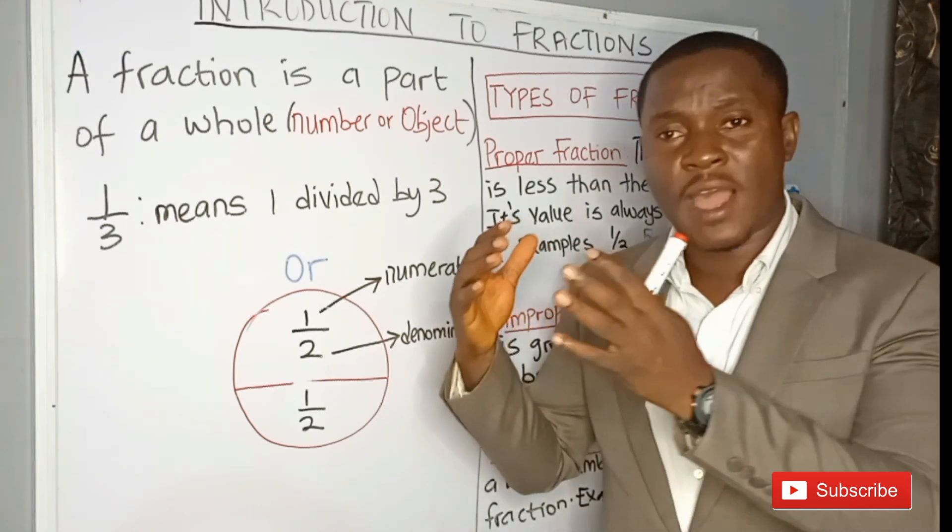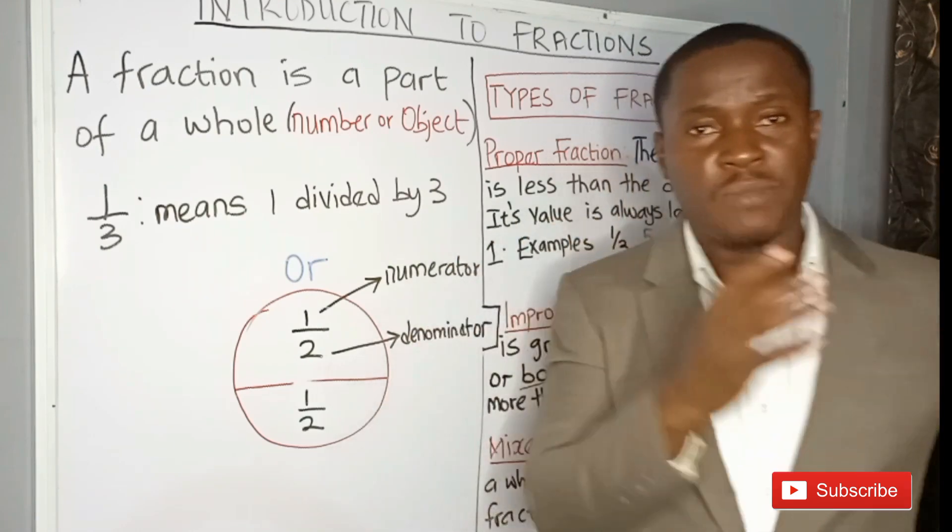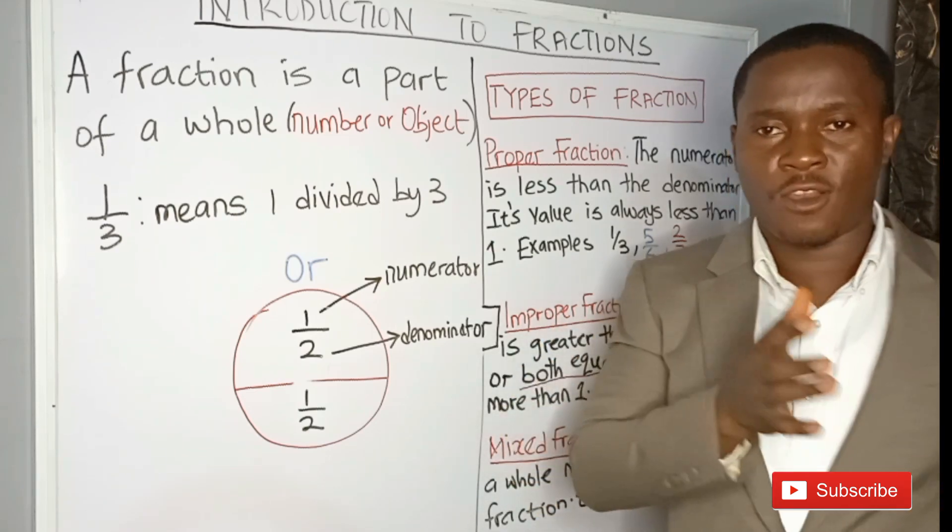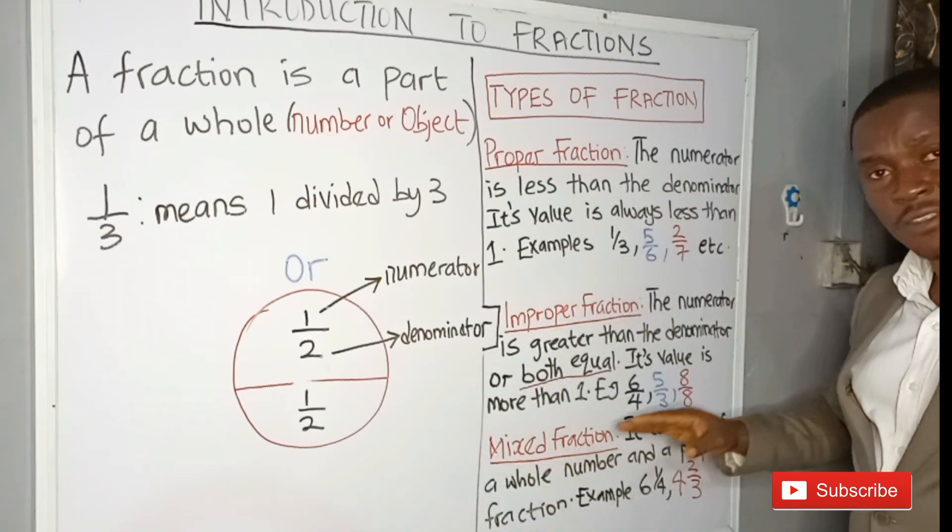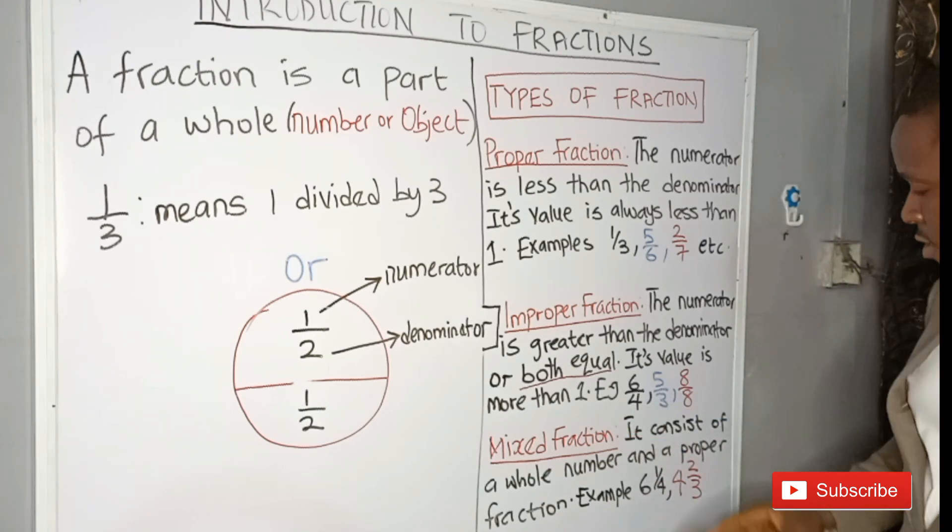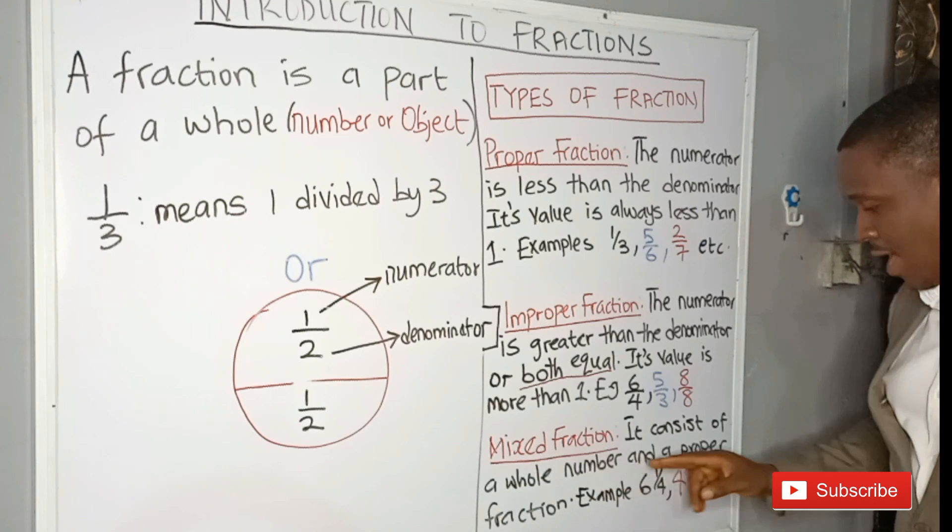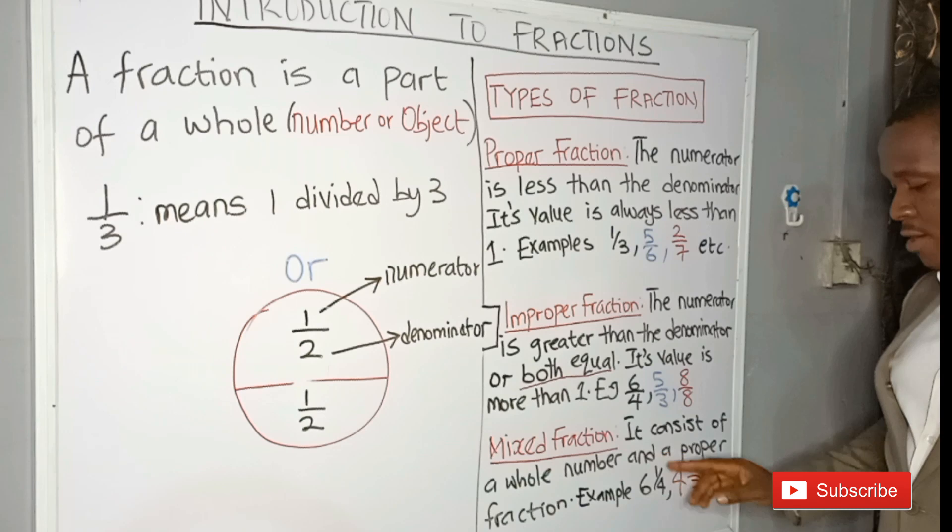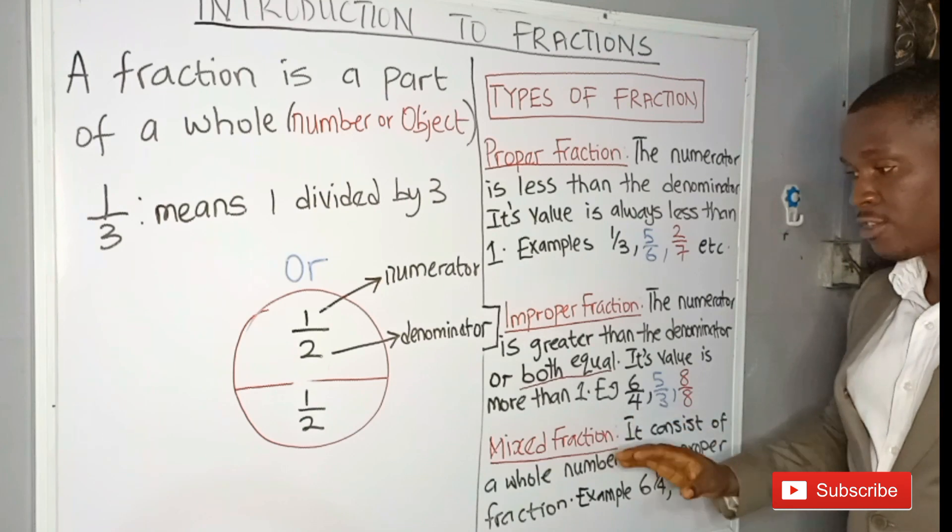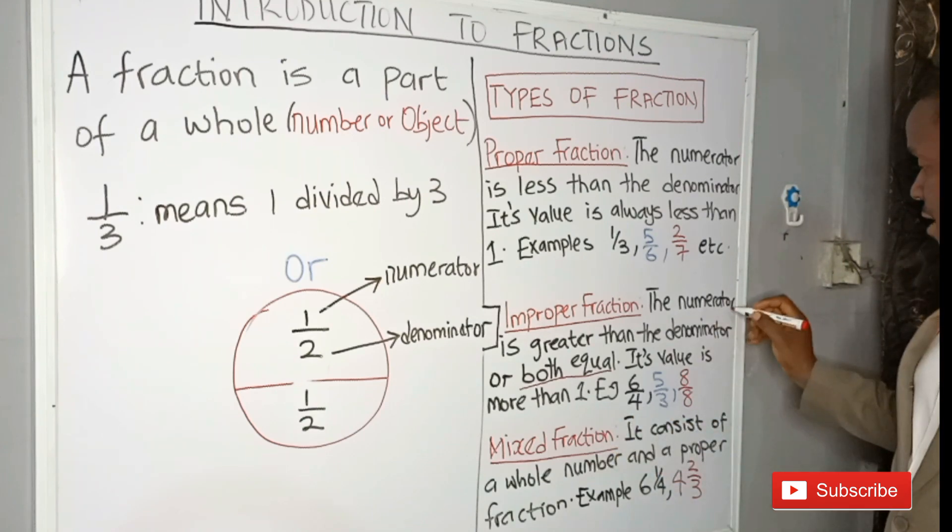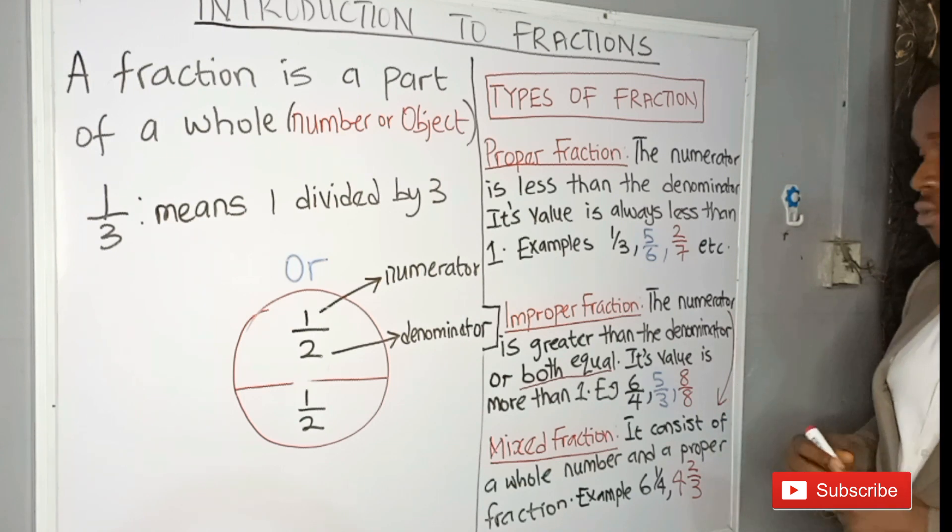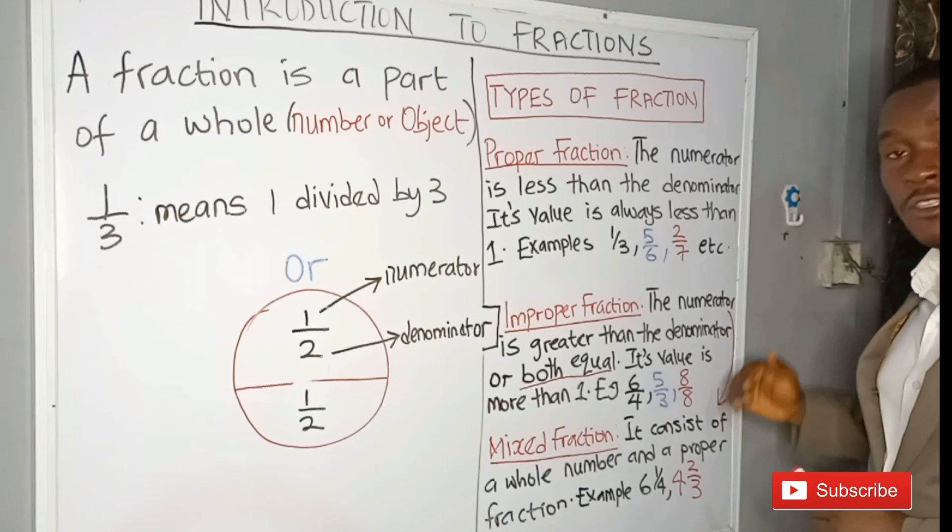So when we have a situation where we have a smaller number lifting a bigger number, what do we do about it? Then there is a way to remove the extra load. The third type of fraction is called mixed fraction. Mixed fractions consist of a whole number and a proper fraction. For example, we have 6 and 1 over 4. We have 4 and 2 over 3. These are mixed fractions, and they are gotten when an improper fraction is converted to a mixed fraction.